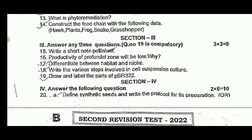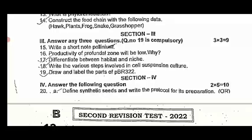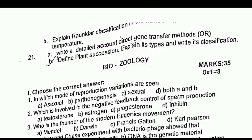This is a model question — just one sample paper. Now look at the 5-mark section. Define synthetic seeds and write the protocols for its preparation. Next 5-mark question from the ecology chapter, chapter 6: temperature classification. Biotechnology — write a detailed account of the direct gene transfer method. Define plant succession and explain the types of plant succession with classification.